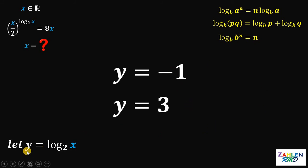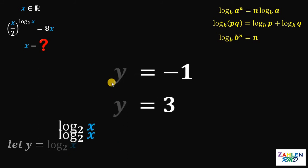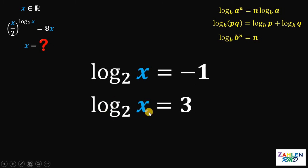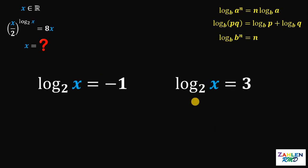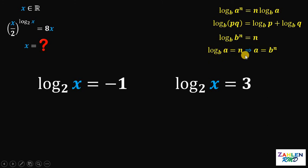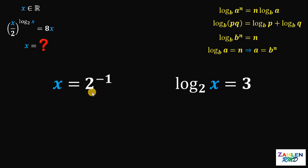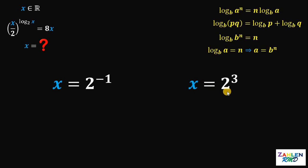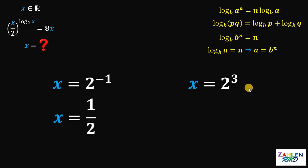Since y is logarithm of x to the base of 2, we have logarithm of x to the base of 2 equals negative 1, and logarithm of x to the base of 2 equals 3. We are now ready to solve for x by converting each logarithmic equation to exponential form. Using the rule: if log base b of a equals n, then a equals b raised to n. So x equals 2 raised to negative 1, or x equals 2 raised to 3. That gives us x equals one-half, or x equals 8.